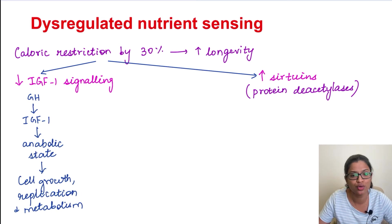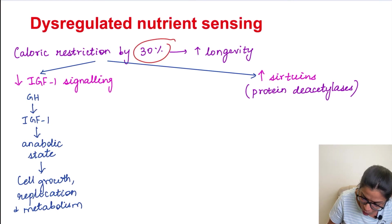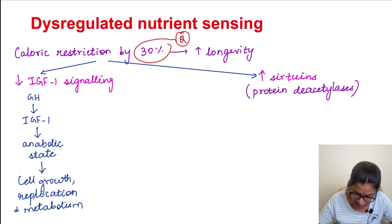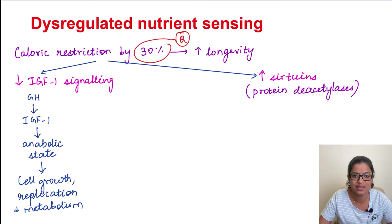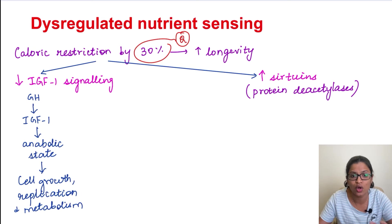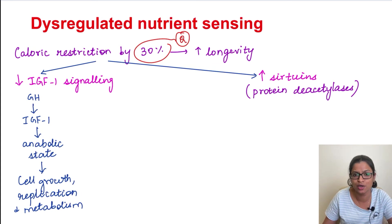Moving on to the last mechanism: dysregulated nutrient sensing. We all know that caloric restriction to a certain amount can increase longevity. Caloric restriction by 30 percent is known to increase longevity through two things: it decreases the IGF signaling pathway and increases the sirtuins. IGF is insulin-like growth factor — as the name suggests, it behaves like insulin and is a growth-promoting factor. Growth hormone stimulates IGF-1, and IGF-1 causes an anabolic state. When a cell enters an anabolic state, the cell undergoes metabolism, growth, and replication — all of which lead to free radical production and DNA damage.